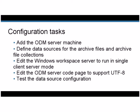After you've installed ODM, you will perform these tasks to configure ODM. First, you'll add the ODM server machine to Optum Connect Studio — this task identifies the location of the ODM server that you want to configure. Next, you'll define data sources for the archive files and archive file collections you want to access. You'll edit the Windows Workspace server to have ODM run in single client server mode, which helps provide better performance in accessing archived data, which is in files rather than a database.